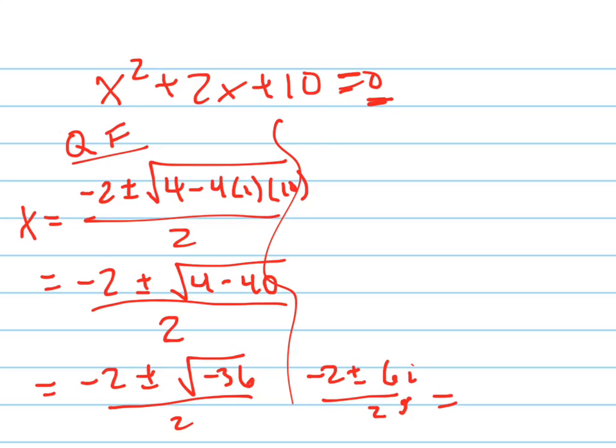-2 plus or minus 6i all over 2. And now, I could distribute the 2 into the top. Both have to distribute it. So it's -1 plus or minus 3i. Those are my two zeros. -1 + 3i, -1 - 3i. That's by using the quadratic formula.